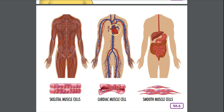The muscular system and the skeletal system must work together for you to be able to move. When muscles contract, they squeeze together, get shorter, and cause movement because they're pulling on a bone. Muscles work in pairs — because muscles can only pull on bone, one muscle needs to pull on a bone in the opposite direction. One muscle pulls while the other relaxes; they take turns. Muscles never push — muscles can only pull.